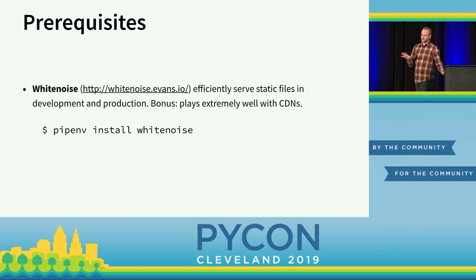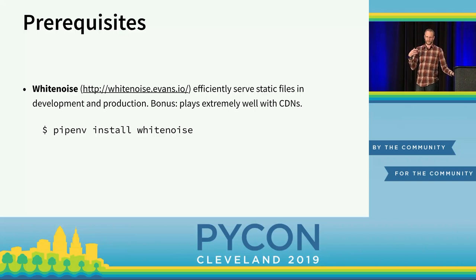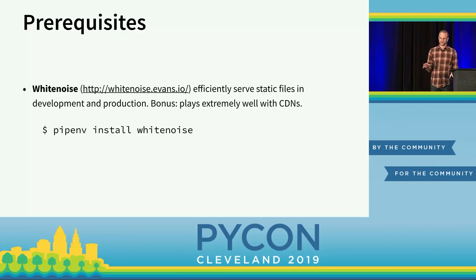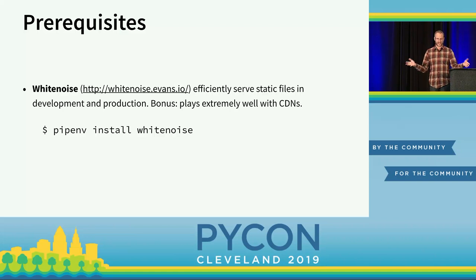You're going to want to use WhiteNoise. WhiteNoise is a static file server that lets Django actually serve these static files. Back in the day, this was discouraged — we encouraged using an external web server like Nginx to serve static assets. That's no longer the case. WhiteNoise is really quite good; it integrates well with Django so you can have one server that serves both your dynamic and static stuff. As a bonus, WhiteNoise sets all the correct headers on your assets so that if you use a CDN like Cloudflare, you just point Cloudflare at your Django site and you've got caching of all your static stuff — no configuration needed.